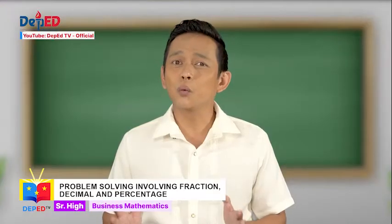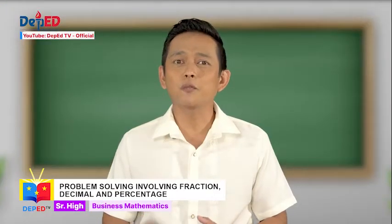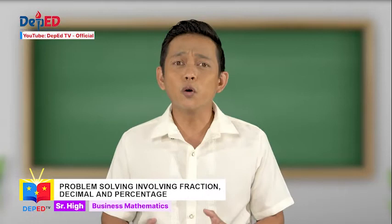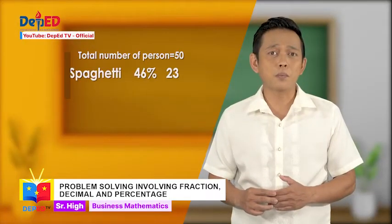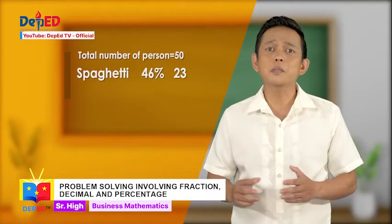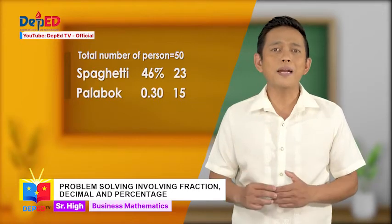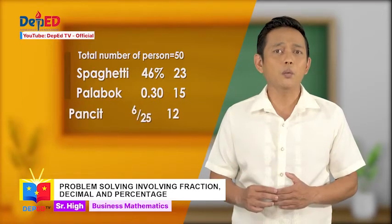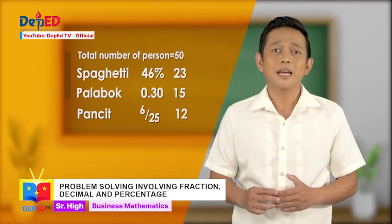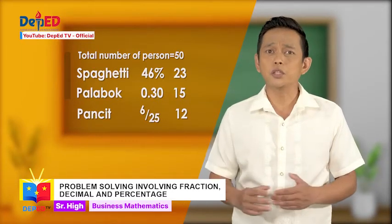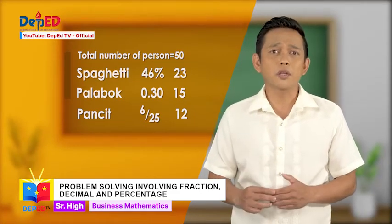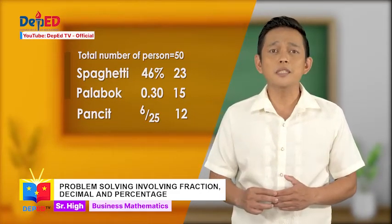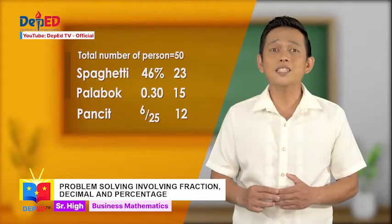So there, we already computed the number of friends who voted for each snack. There are 23 people who voted for spaghetti, 15 for palabok, and 12 for pansit. As per conversion: 46% of your friends is 23, 0.30 of your friends is 15, and 6 over 25 of your friends is 12.